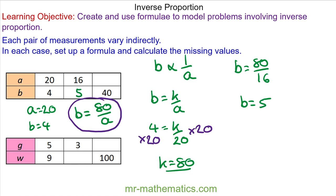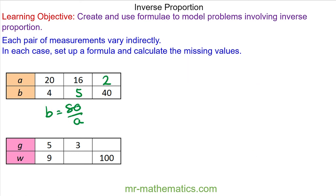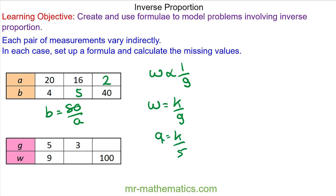And when b is equal to 40, we have 40 is equal to 80 over a, so a will equal 2. Finally, for our last question, w is inversely proportional to g. We can model this using the value of k. Substituting in w equals 9 when g equals 5, and multiplying both sides by 5, we can see that k is equal to 45.